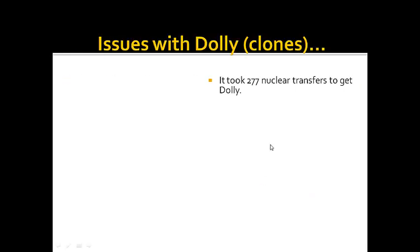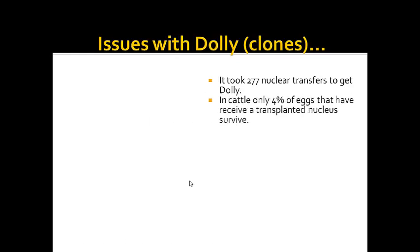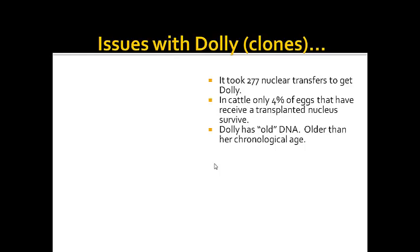Issues with Dolly and clones in general: it took 277 nuclear transfers to get Dolly — 277 instances of taking the nucleus of one cell and putting it into another cell. Of those, 276 did not make it. In cats, only 4% of eggs that received a transplanted nucleus survive. Dolly had old DNA — when they studied her DNA it was older than her birth age, more closely related to the age of the sheep her original cell came from. Dolly also developed arthritis early in life, again perhaps because her DNA was old.